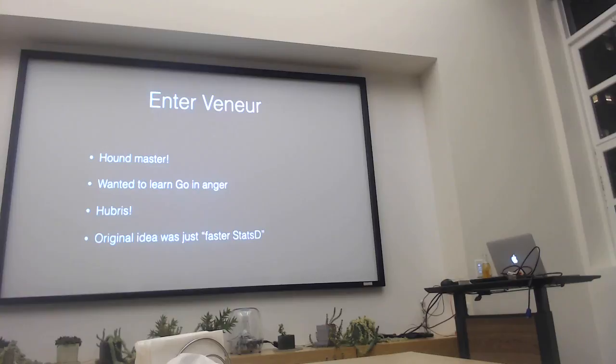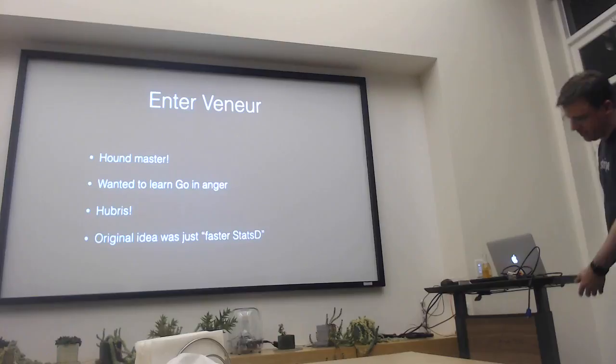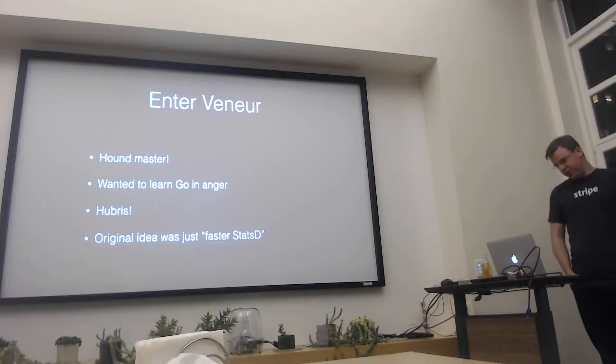Brubeck is C-based and is very fast and can handle a lot of packets, but it's not DogStatsD. And DogStatsD is the tag-based system. So I wanted something that was basically Brubeck but for DogStatsD, and I wanted to write it in Go. So we basically just started off with: I'm going to make a faster StatsD.